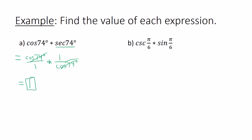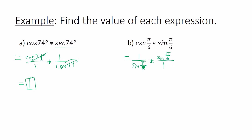Next: cosecant(π/6) times sine(π/6). Since cosecant is 1 over sine, this becomes 1/sine(π/6) × sine(π/6). You're multiplying sine by its reciprocal, so everything cancels and the answer is 1.